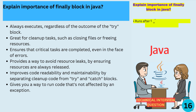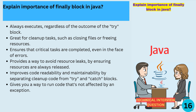Here's a summary of the finally block: it always executes regardless of the outcome of the try block. It's great for cleanup tasks, such as closing files or freeing resources. It ensures that critical tasks are completed even in the face of errors, and provides a way to avoid resource leaks by ensuring resources are always released. It also improves code readability and maintainability by separating cleanup code from try and catch blocks.